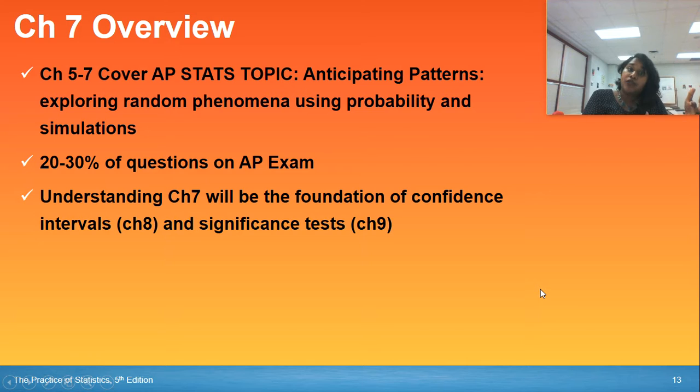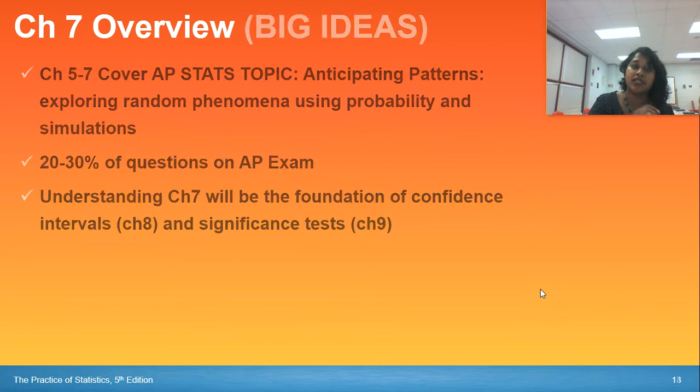Not just going backwards, recognizing why Chapters 5 through 7 are so important and how they connect to each other. Chapter 7 was going to be the building blocks and foundations for recognizing the two other most important topics on the AP statistics exam, which would be confidence intervals and significance tests, which we'll see in Chapter 8 and Chapter 9.